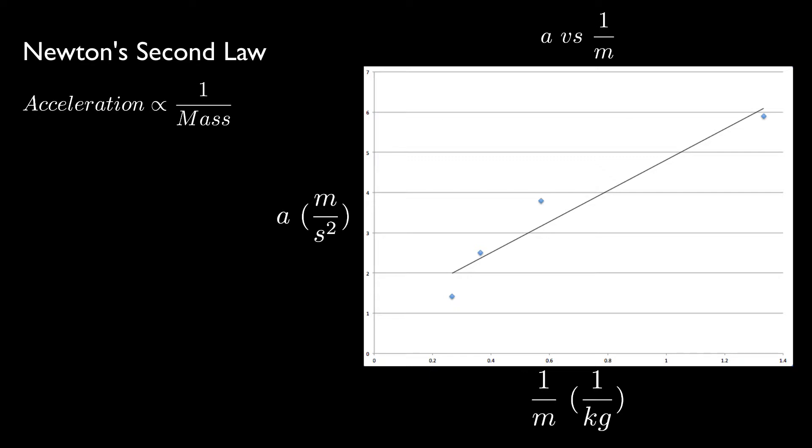So in this case, the gradient of the graph is given by the acceleration divided by one over the mass. And so the gradient is equal to the acceleration times the mass, which is equal to the force. And since we were applying pretty much the same force in each case, we end up with a nice straight line here.